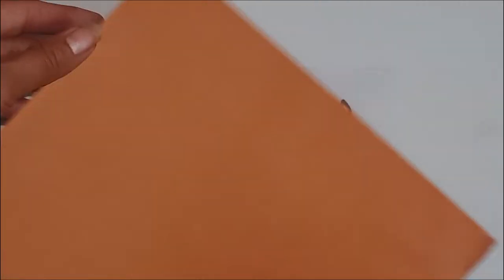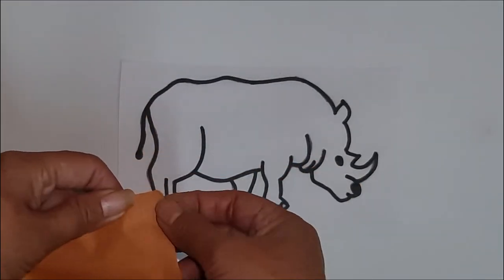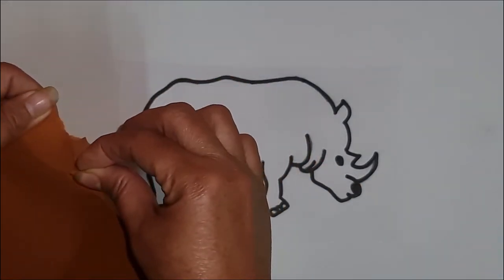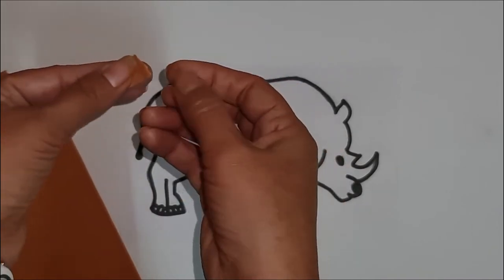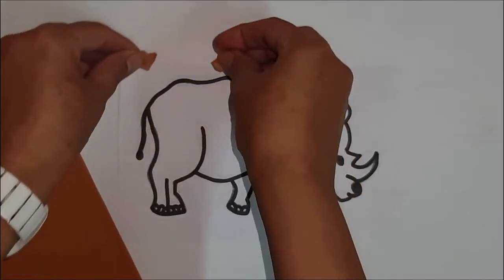First, we will cut the brown sheet with scissors. Then with the help of the fingers, we will make small pieces like this.